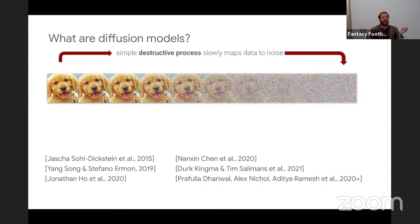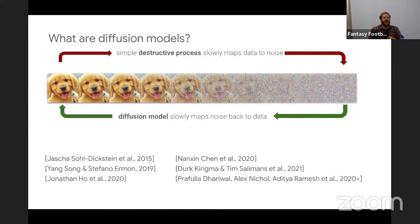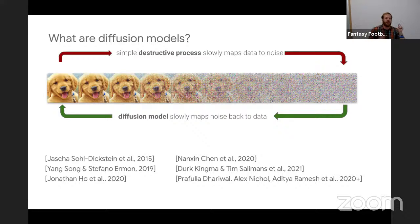What do these models learn? They're trying to learn how to reverse this process — to go from random noise all the way back to a high-quality image. What's nice about diffusion models is it's not done in one shot; it's broken down into a sequence of simple steps, going from a noisier image to a less noisy image. This is key to why diffusion methodology really works: we found a way of taking a really complicated problem and breaking it down into many small steps.